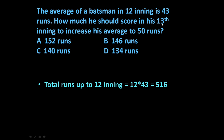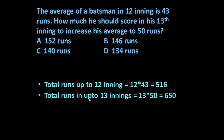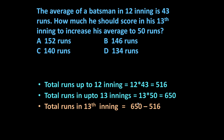We want the average to be increased to 50 runs after the 13th inning, so total runs up to the 13th inning will be 13 × 50 = 650. After 13 innings his total runs should be 650, and after 12 innings his total runs were 516. So runs required in the 13th inning = 650 − 516 = 134. The answer is 134.